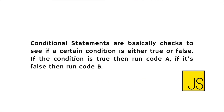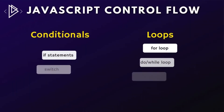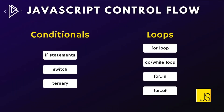Loops allow us to perform repetitive tasks with less code. For example, using loops we can iterate over an array and perform some sort of action on each piece of data, or we can use a loop to compile a list of all the items. For conditionals we have things such as if statements, and variants like if-else and else-if. We also have switch statements and finally the ternary operator.